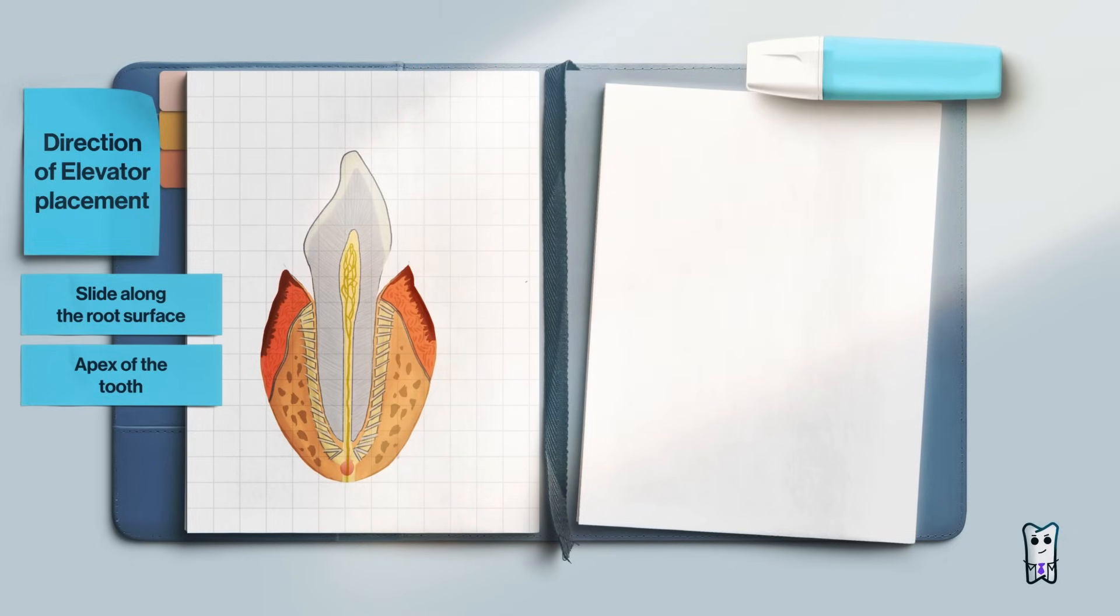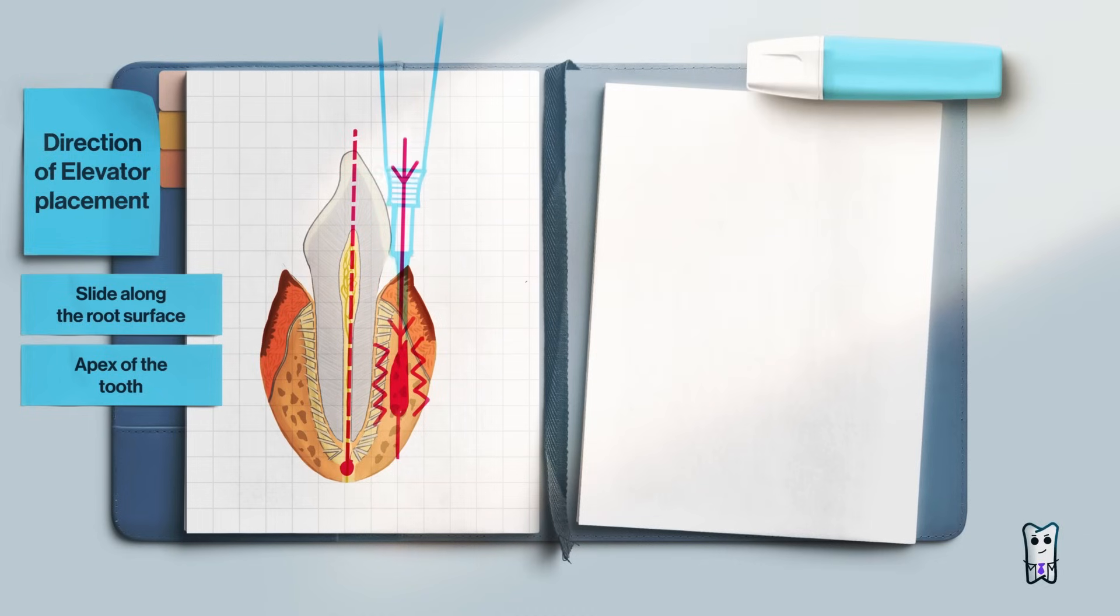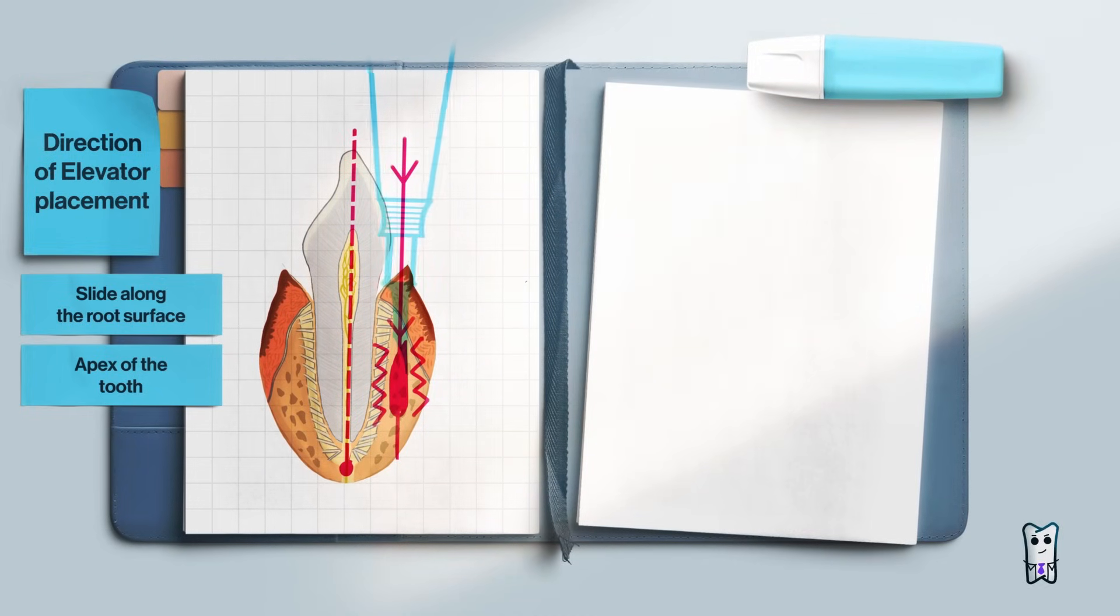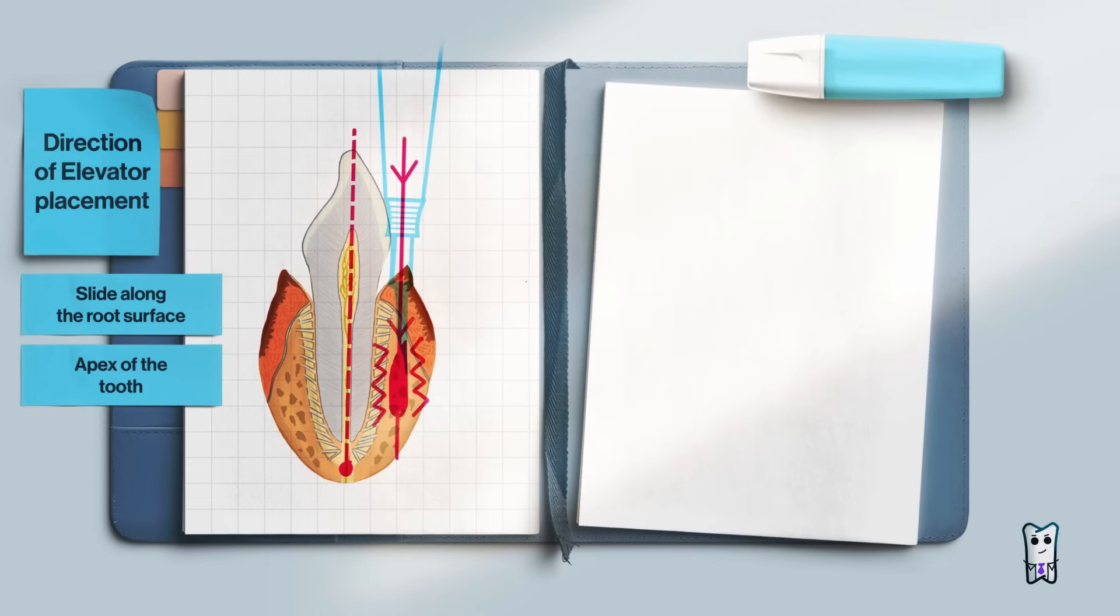If the direction is not correct, the tip of the elevator goes on top of the crestal bone. If you start making rotational movements instead of going in depth of the periodontium, the tip starts scraping the crestal bone.